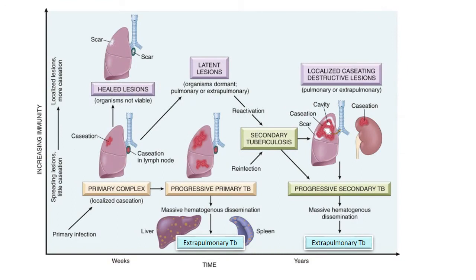The natural history of tuberculosis may vary. A primary infection localised to the lungs may result in progressive primary tuberculosis and massive haematogenous spread. Alternatively, the organism may establish latency. The MTB establishes pulmonary or extra-pulmonary dormancy, waiting patiently for its next performance. Secondary tuberculosis caused by reactivation or reinfection may result in progressive secondary TB, predisposing the host, once again, to massive haematogenous spread.